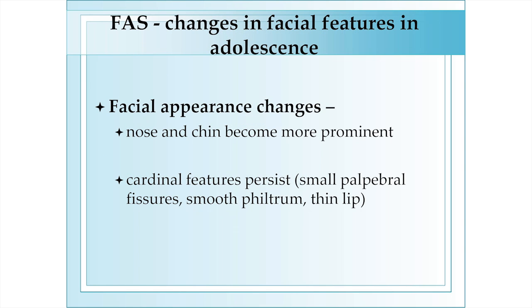In adolescence, the facial appearance changes because, with puberty, the nose and chin become more prominent and other changes are evident. However, the cardinal features of fetal alcohol syndrome — small palpebral fissures, smooth philtrum, and thin upper lip — persist.